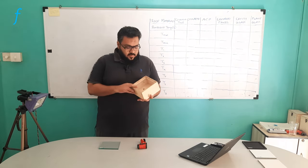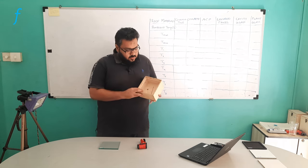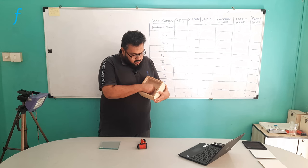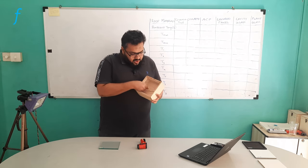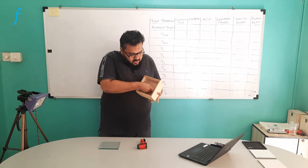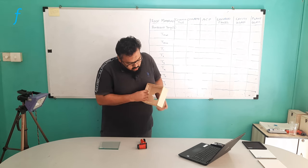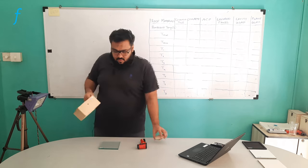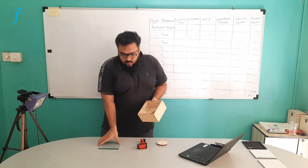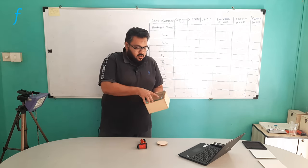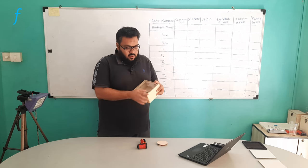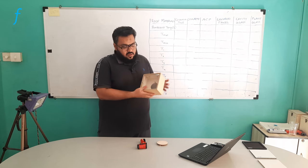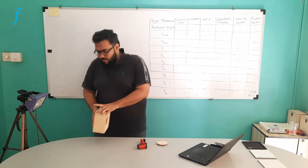Here we have the box, and as you can see, there is an openable slot provided and we have to open this. This is how the slot needs to be opened. Next, we will fix the building material. Here I am taking the plain glass material and fixing it here, keeping it vertically.